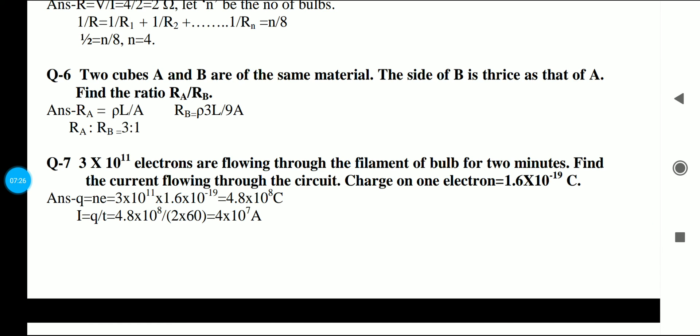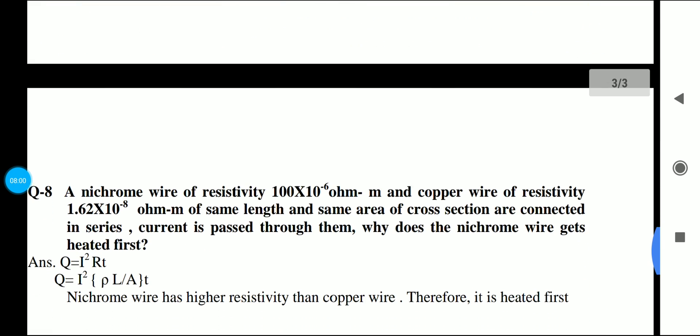Look at the seventh. This is also very simple. In this case, we have 3 times 10 raised to 11 electrons are flowing through the filament of bulb for 2 minutes. Find the current flowing through the circuit. Charge on 1 electron is given. We have the formula Q is equal to ne. We need to put values: 4.8 into 10 raised to negative 8 coulomb. Then we have the current formula: charge upon time. Time is given in minutes, so we will convert it in seconds. And we have the answer: 4 into 10 raised to negative 7 A.